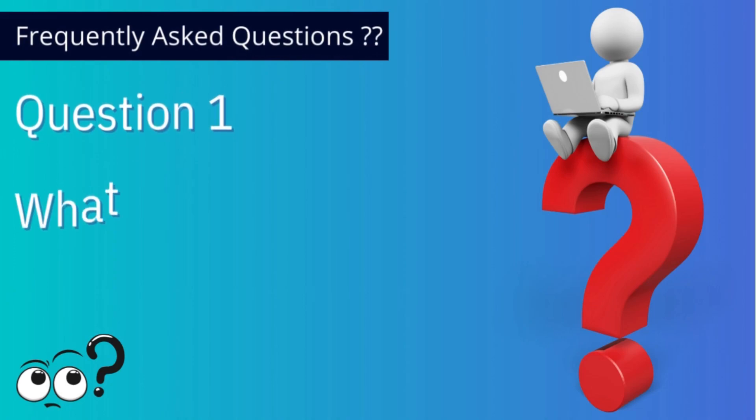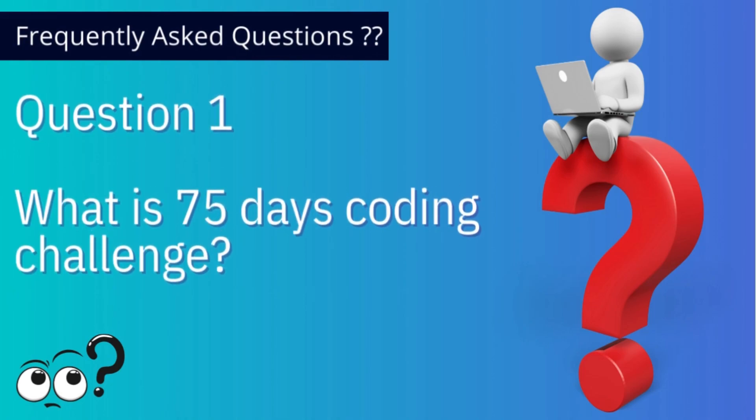About the 75 days coding challenge — as the name suggests, we will be doing 75 coding DSA problem questions from the very scratch, starting from the basics like time complexity and arrays, all the way to advanced topics including graph algorithms, DP, greedy, and more. It is a challenge that will prepare you from the very beginning until you are capable of clearing companies like Google, Facebook, Microsoft, and Amazon.